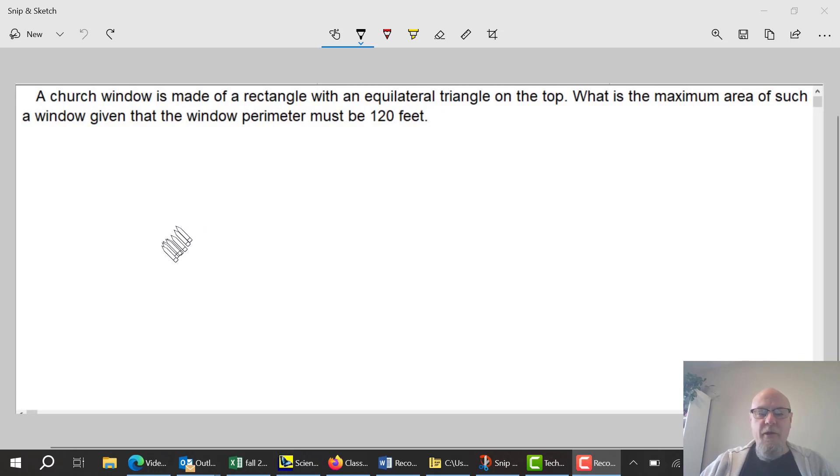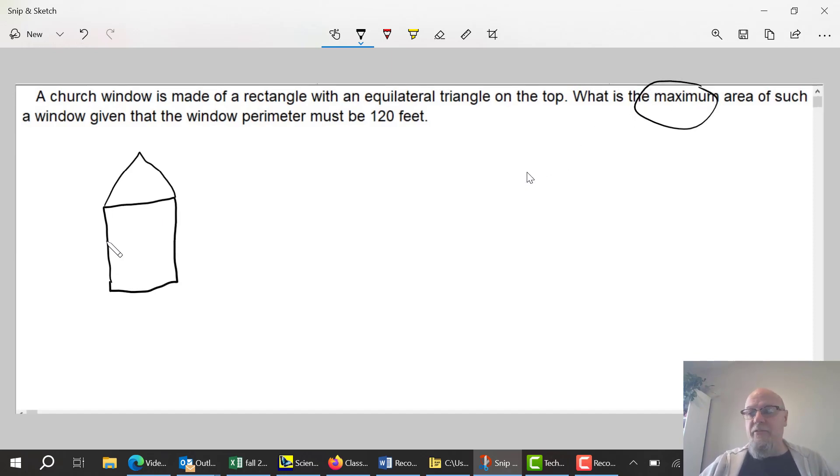So here's another word problem: a church window is made up of a rectangle, so let's draw this - got a rectangle with an equilateral triangle on top. So here's an equilateral triangle. What's the maximum area? Okay, as soon as it says maximum area, it's not a related rate, it's not give me a rate ask me a rate. This is the maximum word problem.